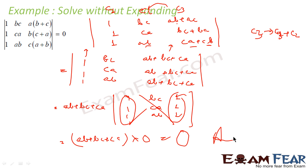So what we did was simply manipulate the columns to make two columns identical or proportional. We added column 3 = column 3 + column 2, found that columns 1 and 3 became proportional, and the whole determinant became 0.